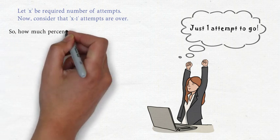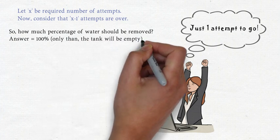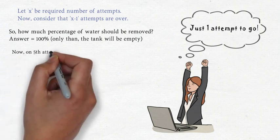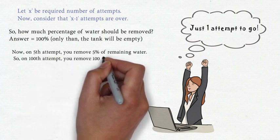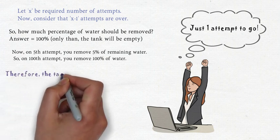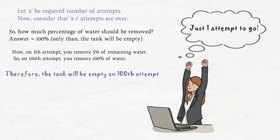So how much percentage of water should be removed? Yes, you are right. If you remove 100% of the water, the tank will get completely empty. Now if you remember, on the fifth attempt you would remove 5% of the remaining water, sixth attempt you would remove 6% of the remaining water, and so on. So on attempt 100 you would remove 100% of the remaining water. So the answer to this problem is 100 attempts.